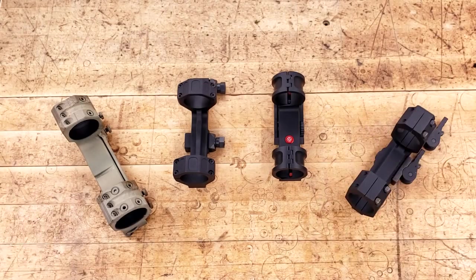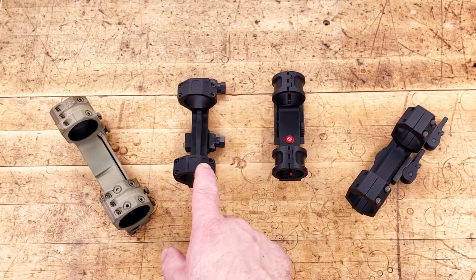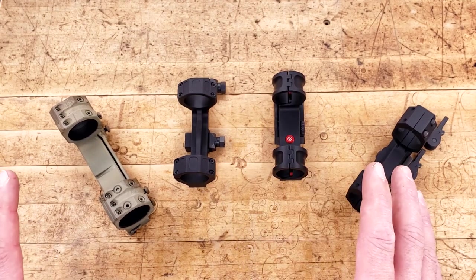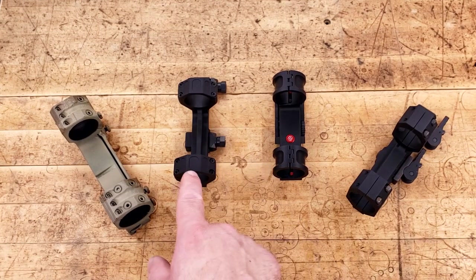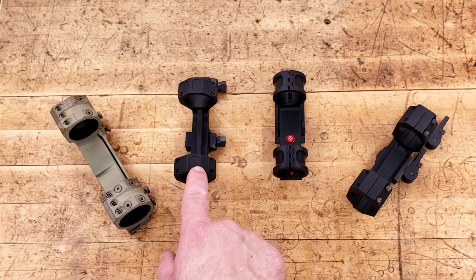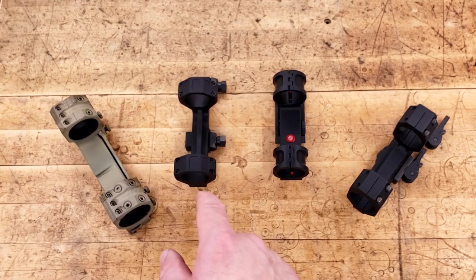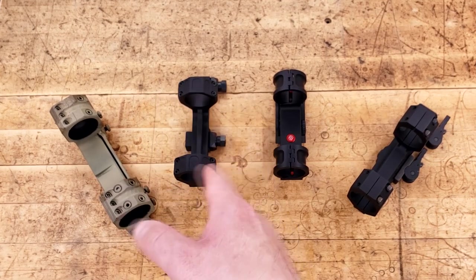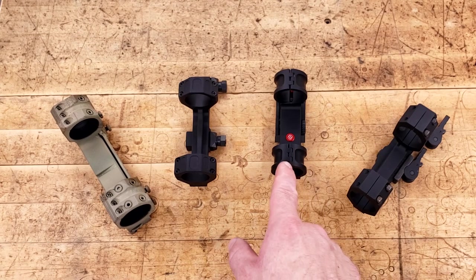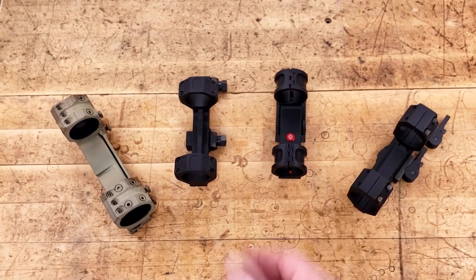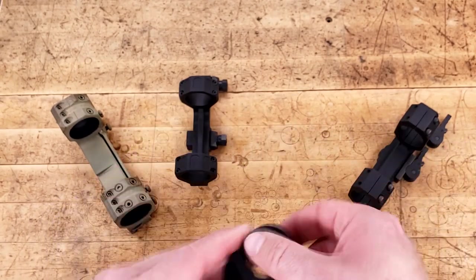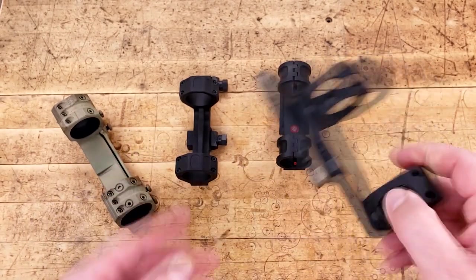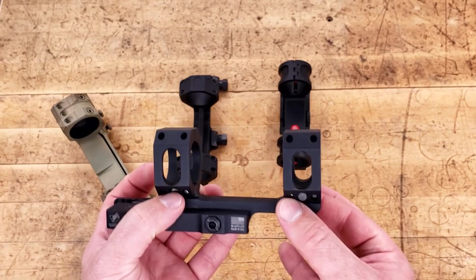So there you have it. You have a $400, a $325, a $400, and a $200 mount. All of which with very similar results, all things considered. I was very surprised by how much movement there was with the Geissele when I was torquing down the caps. That reticle was literally moving all over the place. With the Scalarworks, with the way it's designed, it was super easy. The same thing with the American Defense. That's why I like this clamshell design.